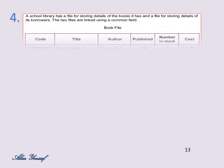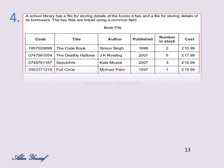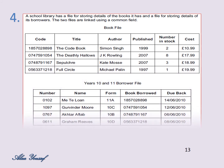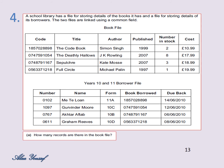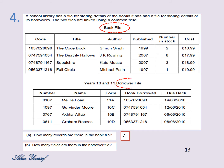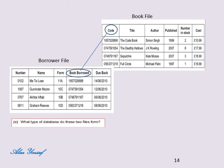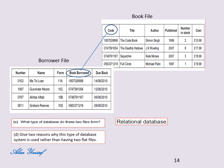Question number four: a school library has a file for storing book details and a file for storing borrower details, linked using a common field. A) How many records are in the book file? The answer is 4 records. B) How many fields are in the borrower file? The answer is 5 fields. C) What type of database do these two files form? The answer is a relational database.